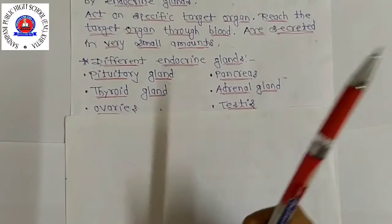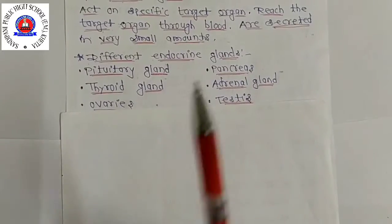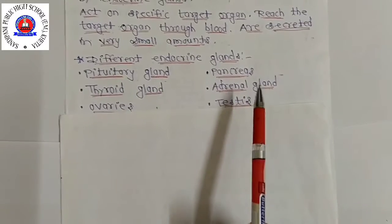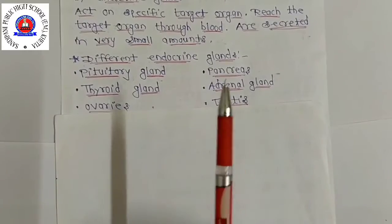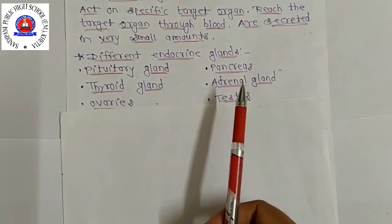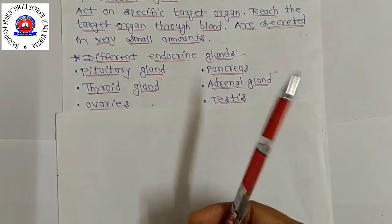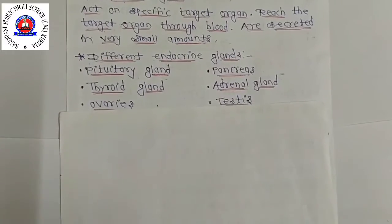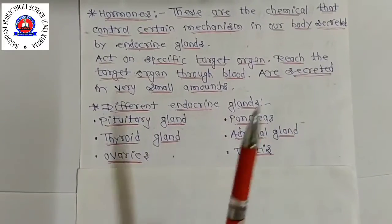Adrenalin hormone is secreted in small amounts all the time, but is secreted in large amounts when a person is frightened or excited. When adrenalin is secreted in large amounts, it prepares our body for action. It speeds up heartbeat and breathing, raises blood pressure, and allows more glucose to go into the blood to give us a lot of energy quickly — to fight or run away.